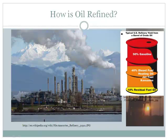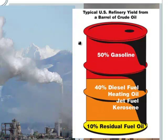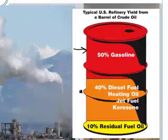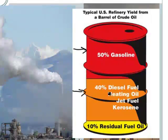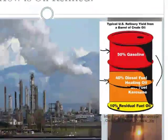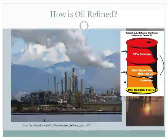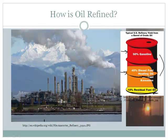Crude oil is used for so many things. Roughly half of it is gasoline, about 40% is diesel fuel, heating oil, jet fuel, and kerosene - so about 90% is used for burning and transportation. The remaining 10% goes to other things like residual fuel oil, and plastics are also made from oil.